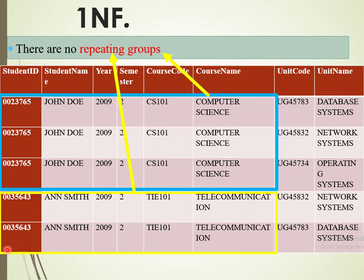For a table to be in 1NF, this must be removed — we should not have repeating groups. The other thing is that the repeating group has to be forming part of the key, and we are going to see shortly how to identify the primary key for this particular relation.